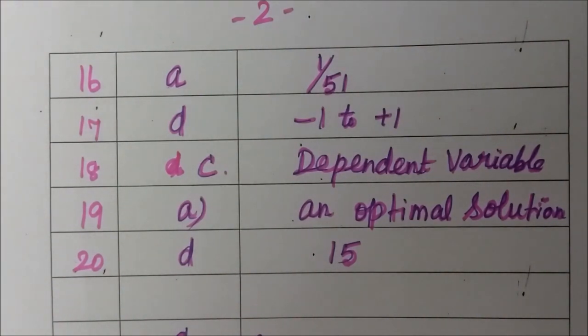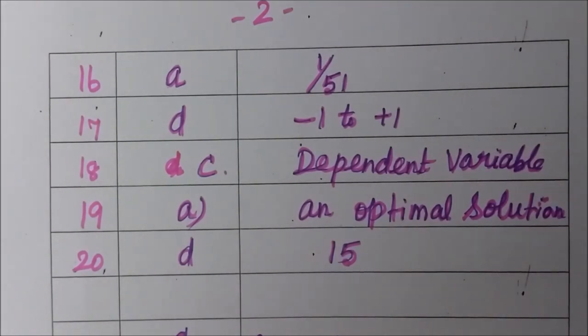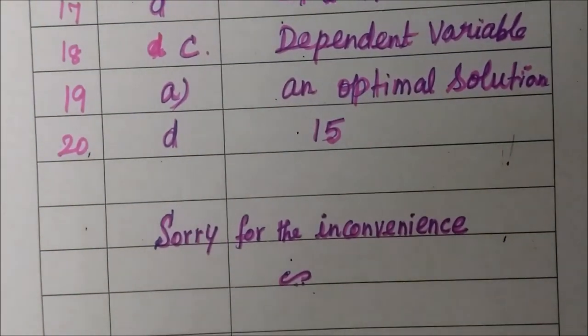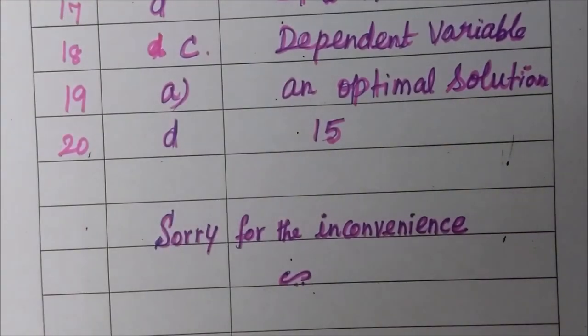Question 19: option a, an optimal solution. Question 20: option d, 15. So the two videos made a mistake, sorry for the inconvenience. Thank you.